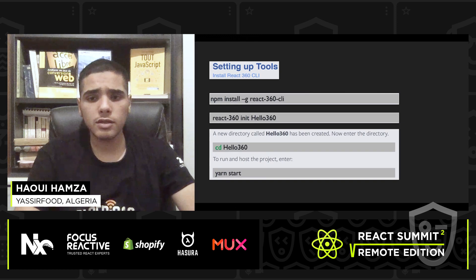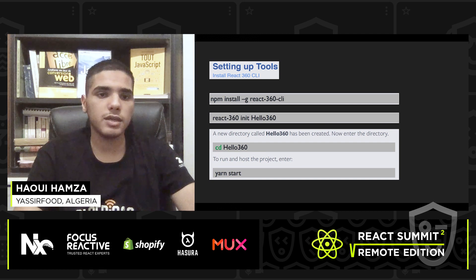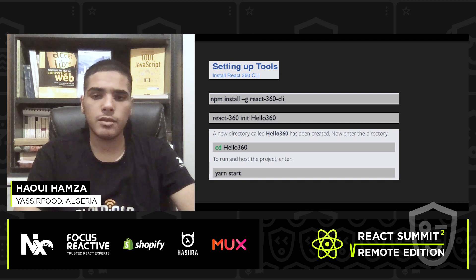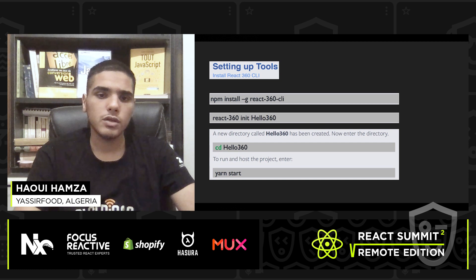To get started, all you have to do is install the React 360 CLI via npm, then init a new project and run npm start to make sure that everything is working fine, and you will have your default project in your web browser.